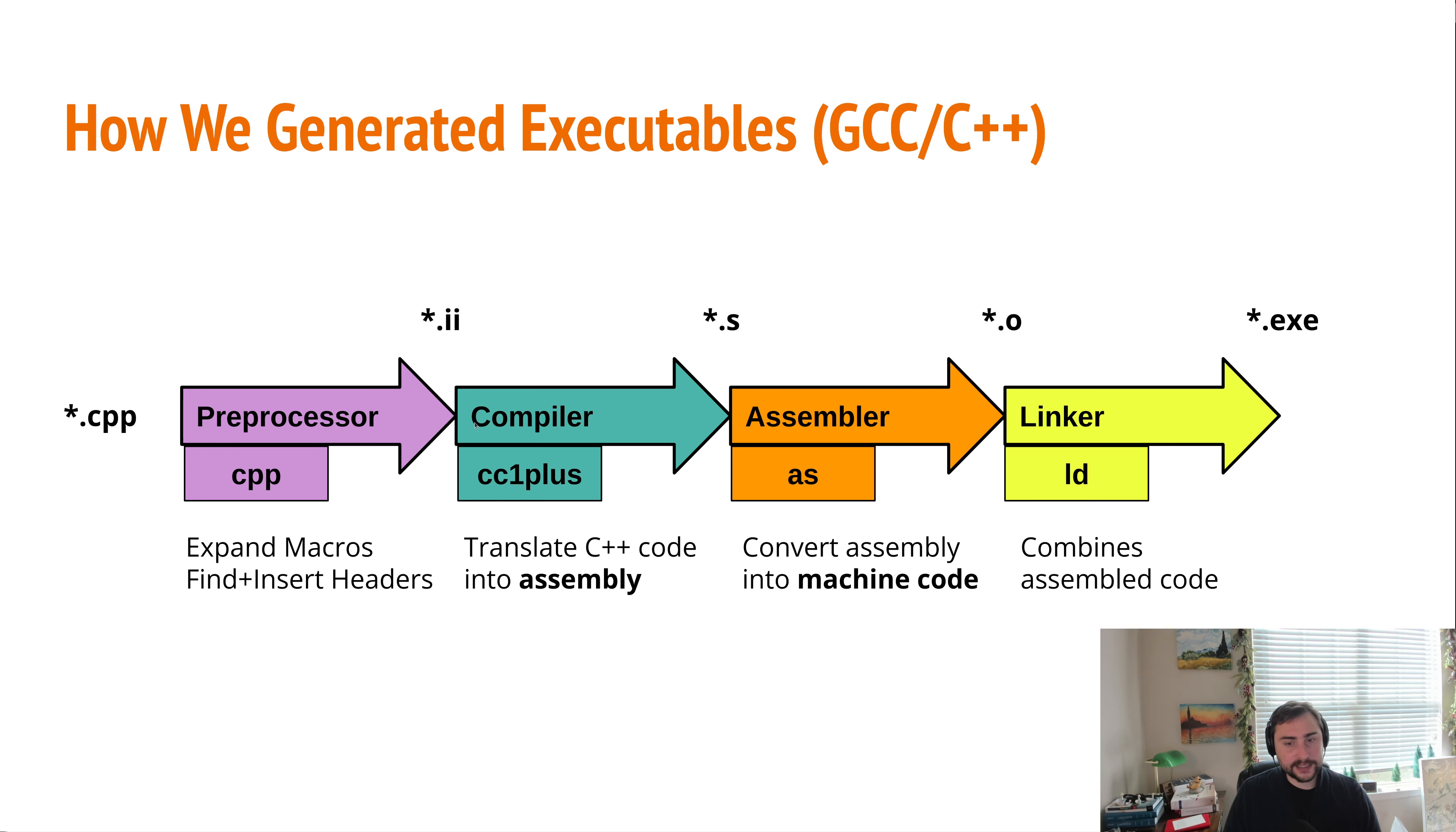Now these files end up getting fed to our compiler. So this is the executable that's going to translate our C++ code into our assembly, translating our C++ into the symbolic representation of the instructions of our processor. And for this, we use an application like CC1+ in the case of GCC. Now we typically don't invoke this directly. We generally invoke all these things via just GCC, that compiler driver that we were talking about. Now, after compilation, we get these .s files, which are our assembly code of our program.